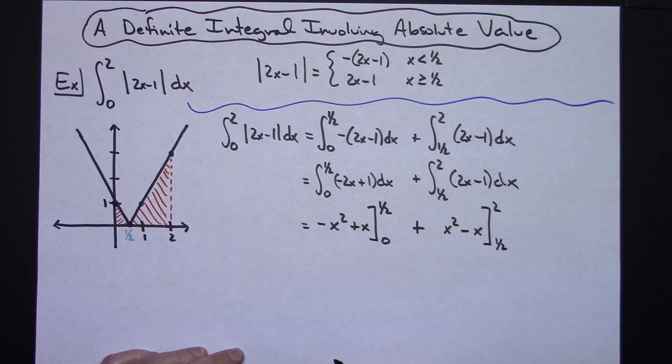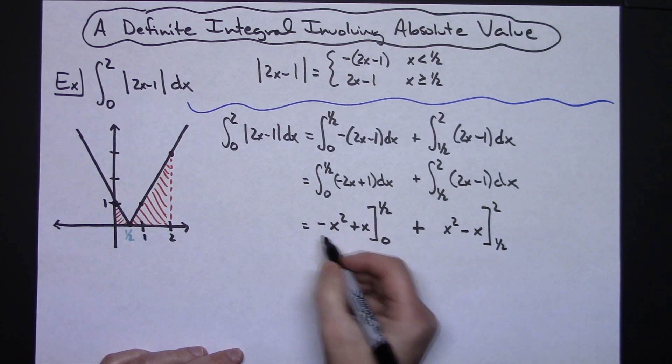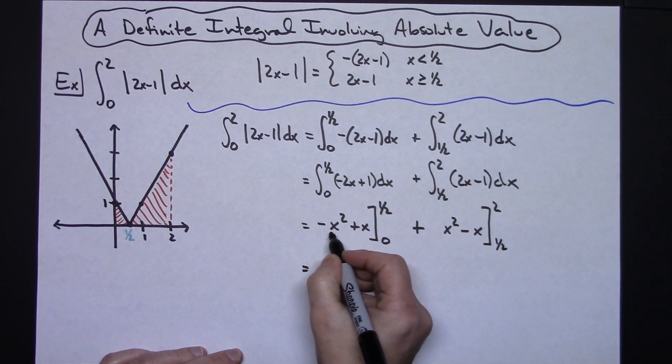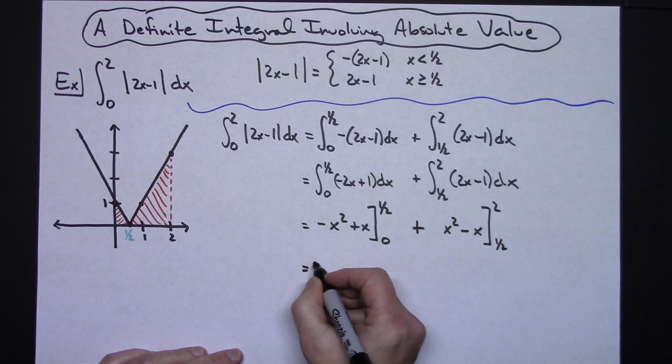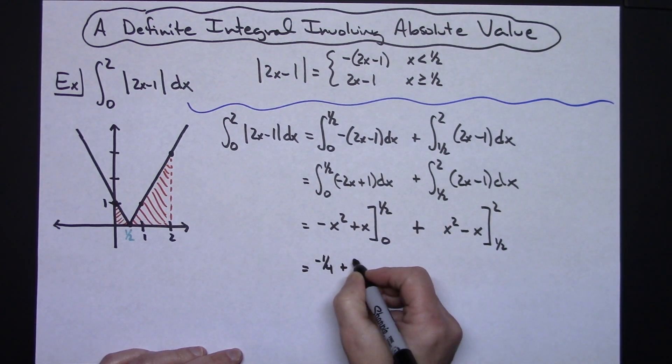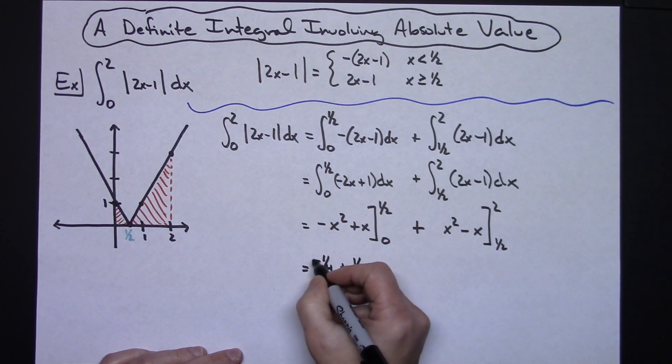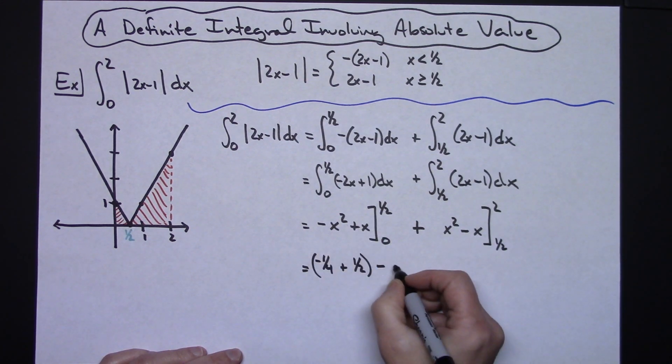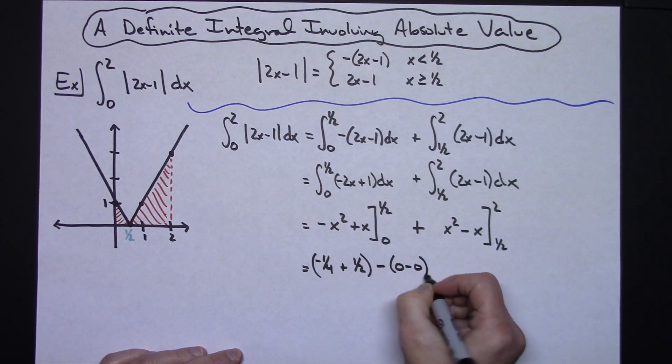From here on out it's just going to be a matter of arithmetic evaluating this out. So if I plug in 1 half, 1 half squared will be 1 fourth so that'll be negative 1 fourth plus 1 half and then minus whatever I get when I plug in 0 which is just going to be 0 minus 0.